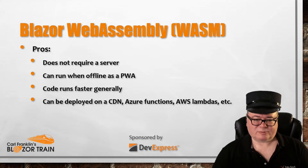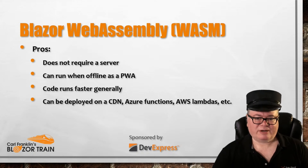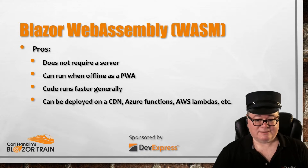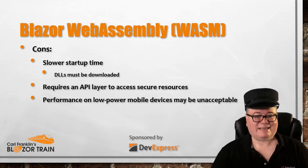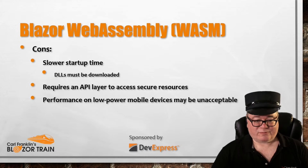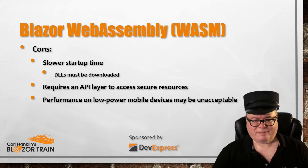What are the benefits of Blazor WebAssembly today? Well, it doesn't require a server, can run when offline, even as a PWA — a progressive web app. The code generally runs faster, though most people won't notice a difference. It can be deployed on a CDN with Azure Functions or AWS Lambdas and the like. On the downside, there's a slower startup time because those DLLs have to be downloaded before your app can run. It also requires an API layer or some other transport to access secure resources — you can't access databases directly, for example. And performance on lower-power mobile devices might be unacceptable.